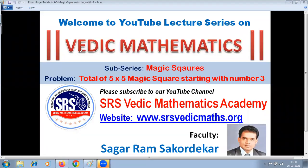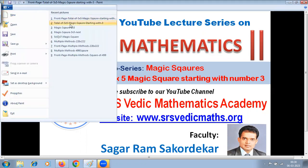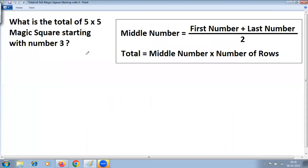Welcome to the YouTube lecture series on Vedic Mathematics, sub-series: Magic Squares. Today's topic is the total of a five-by-five magic square starting with number three. Please subscribe to our YouTube channel, SRS Vedic Mathematics Academy. Our problem is: what is the total of a five-by-five magic square starting with number three?